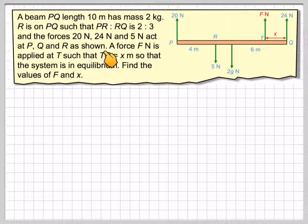And the forces 20N, 24N, and 5N act at P, Q, and R as shown. A force F is applied at T such that TQ is equal to X, so this distance is F as a force applied here so that the system will be in equilibrium. Find the value of the force F and the distance X.